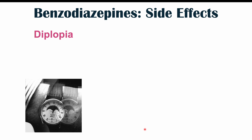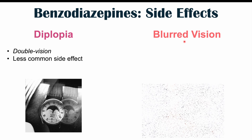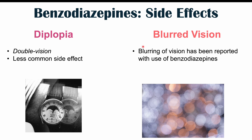Diplopia (double vision) is a less common, more rare side effect. Some patients also describe blurred vision, which is especially problematic for older patients and can contribute to some of the more important complications of benzodiazepine use.